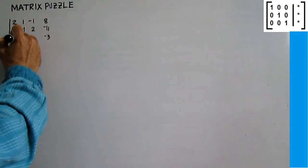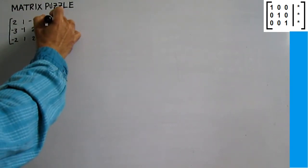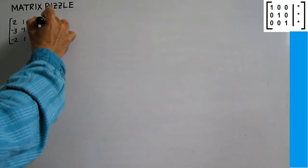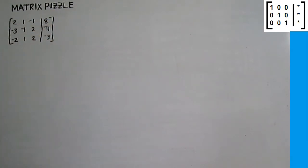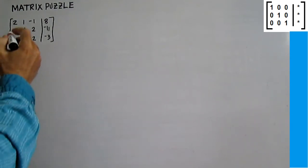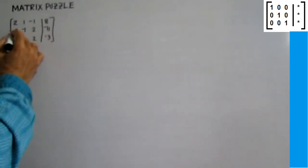This is our matrix. The numbers are 2, 1, negative 1, 8, negative 3, negative 1, 2, negative 11, negative 2, 1, 2, negative 3. This is row 1, row 2, and row 3.